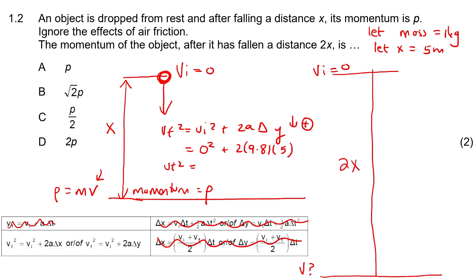Working this out and taking the square root, we get 7√2 — let's leave it in that form so we can see the ratio. The momentum for this case would be 1 × 7√2, which equals 7√2.